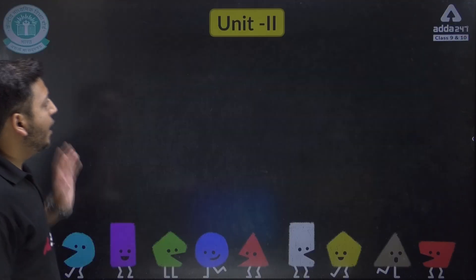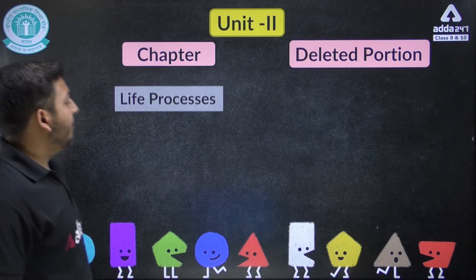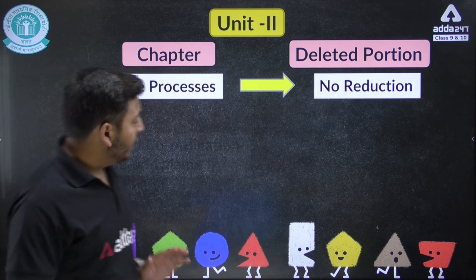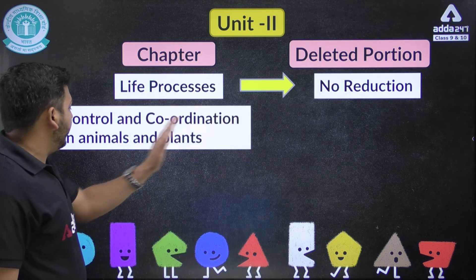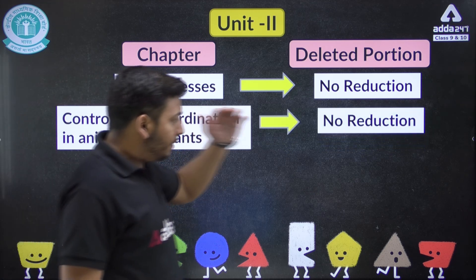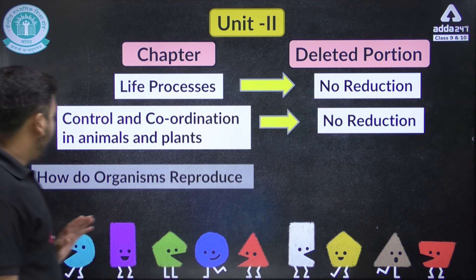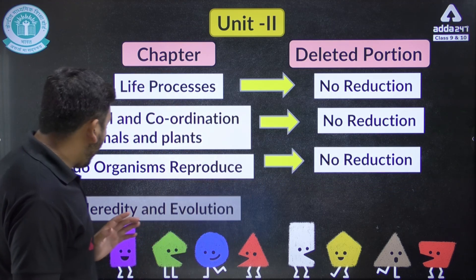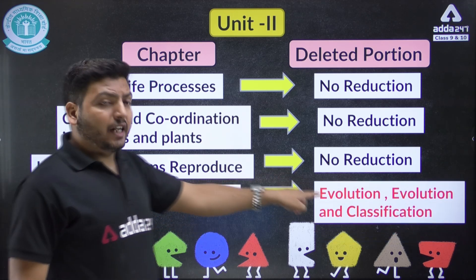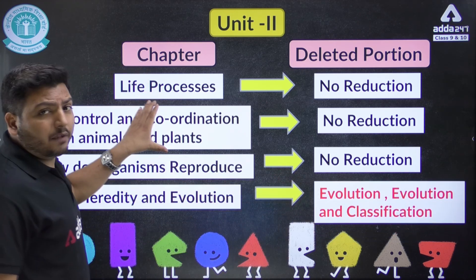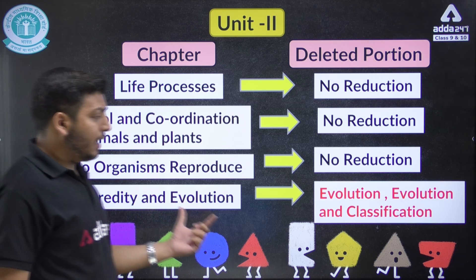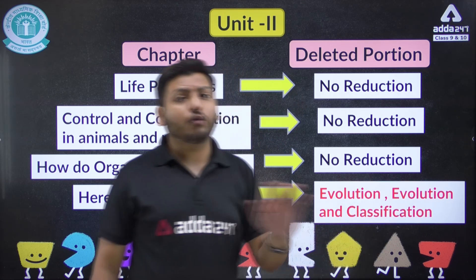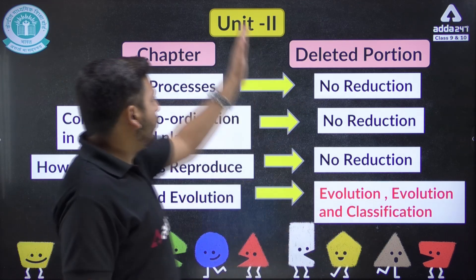In Unit 2, the Life Processes chapter has no reduction. Control and Coordination in Animals and Plants also has no reduction. How Do Organisms Reproduce has no reduction either. In Heredity and Evolution, there is a reduction — the topics of evolution and evolution and classification are deleted. So the first three chapters are read fully, but in Heredity and Evolution, you will not read the evolution topics.